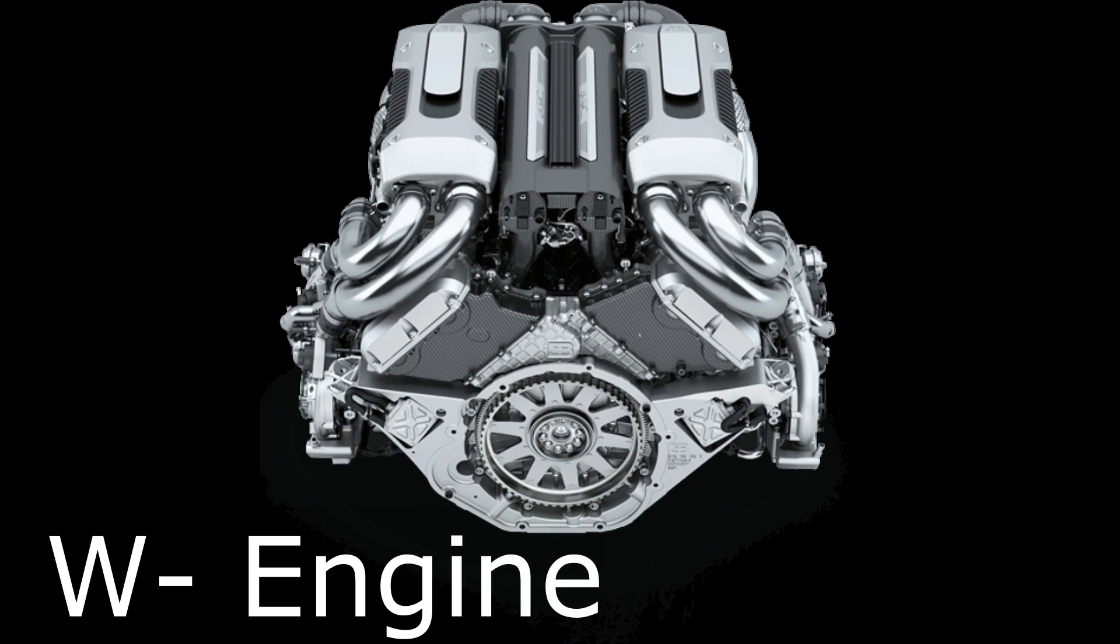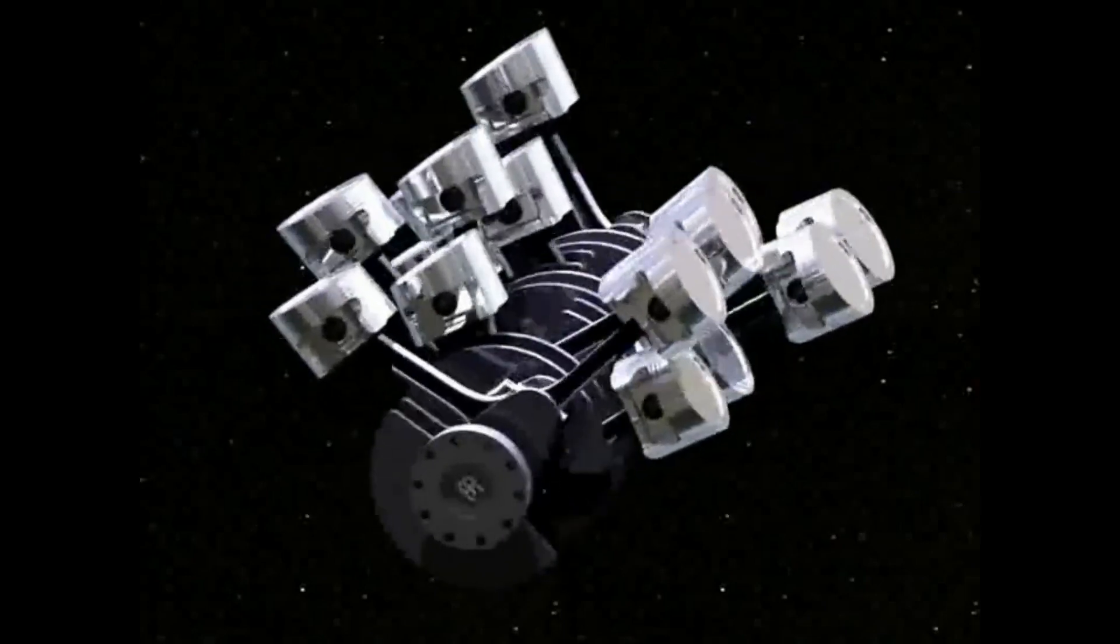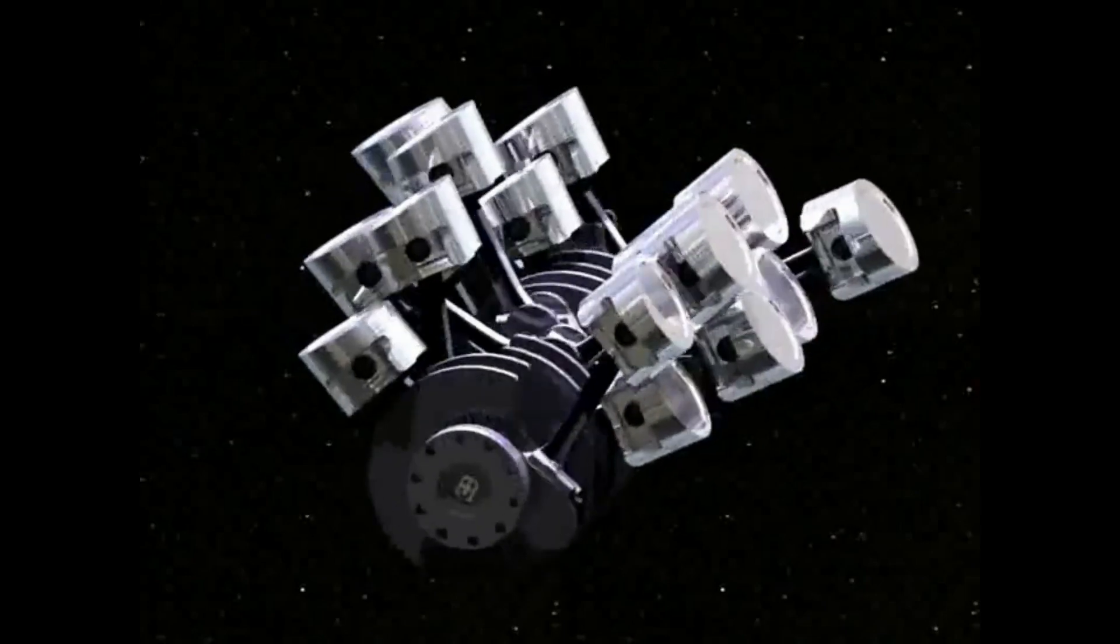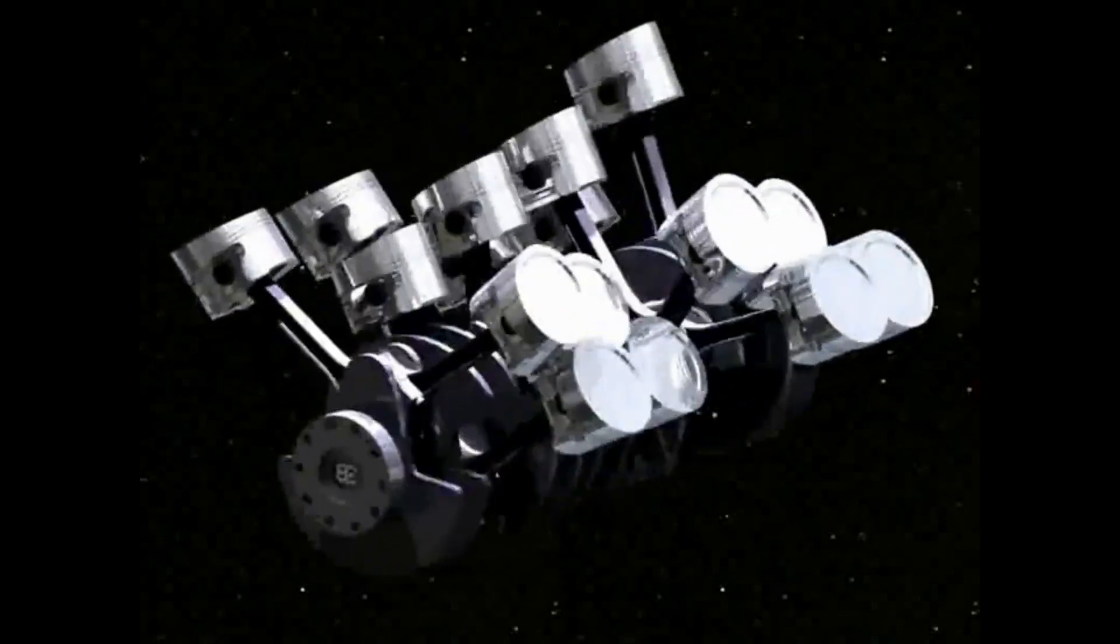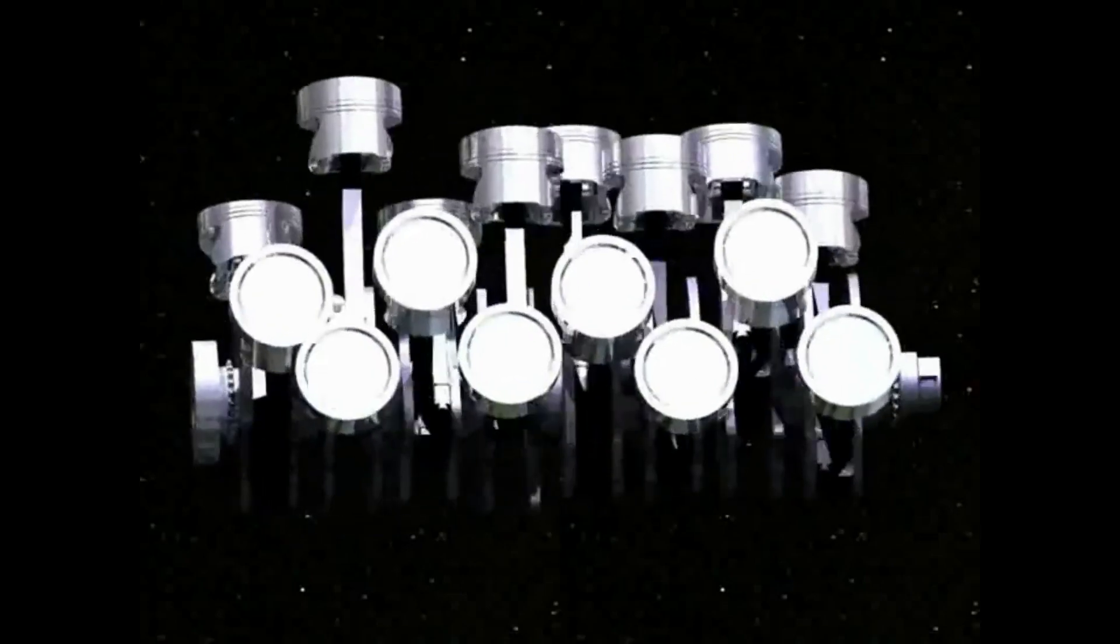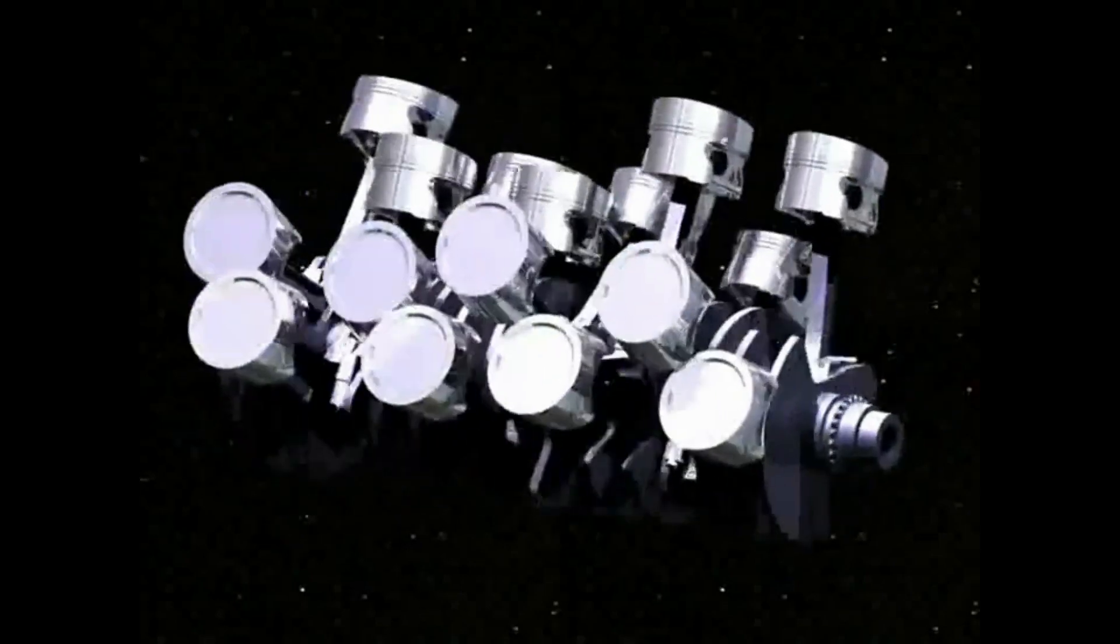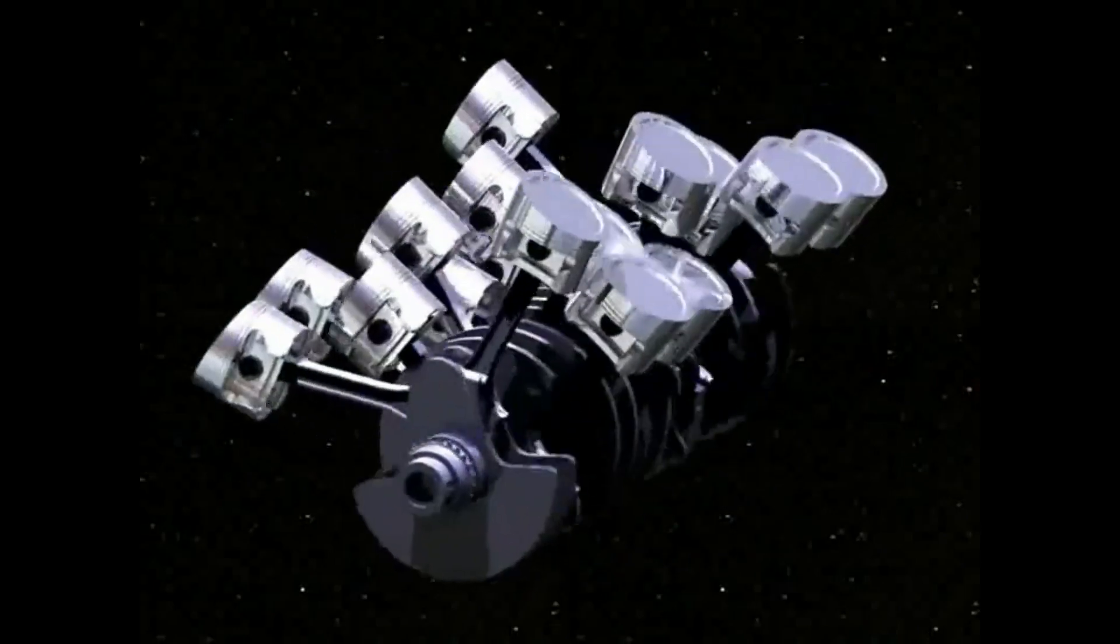The next on the list is the W engine. A W engine is basically two VR engines joined together at their base to form a W configuration. These types of engines are only used in ultra-luxury and high-performance cars, like in some Bentley models and in Bugatti's Veyron and the new Chiron.